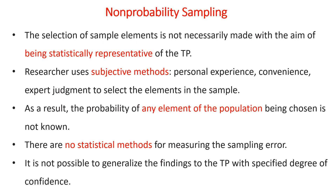Each element does not have an equal chance to be selected because the researcher uses subjective judgment, such as personal experience, convenience, or expert judgment, to select each element in the sampling. As a result, the probability of any element of the population being chosen is not known or is not equal. There is no statistical method for measuring the sampling error in non-probability sampling.